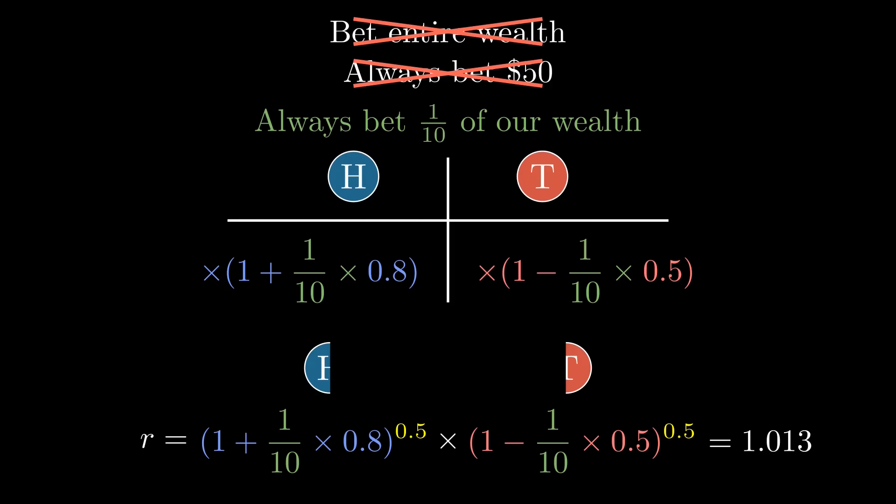This expression gives us the expected mode growth rate per coin flip. The mode will be multiplied by 1.013 per coin flip, which is a net gain. By the way, this is called a geometric mean.